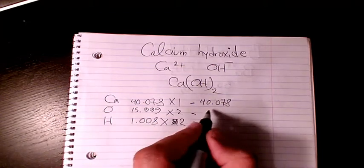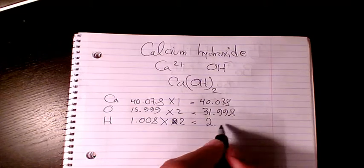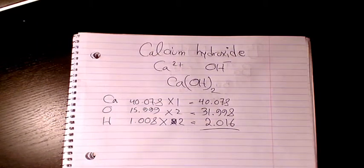Here for oxygen it will be 31.998, and here for hydrogen we have 2.016. Then you need to add them.